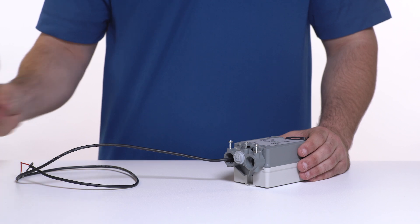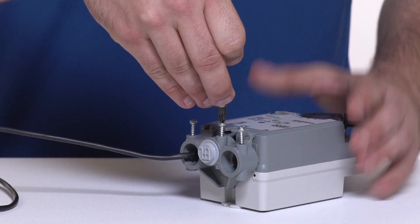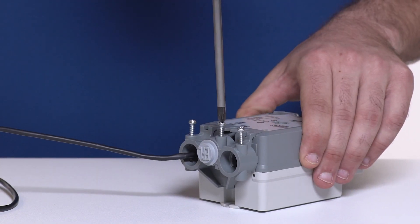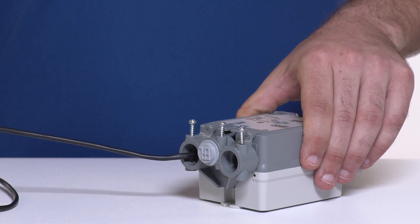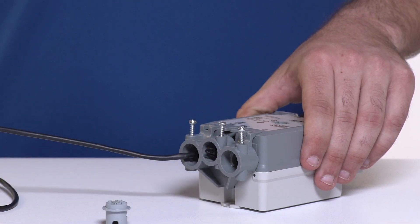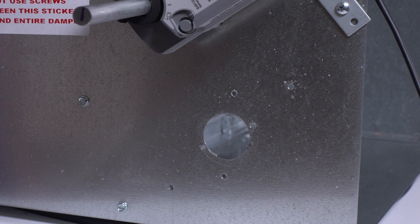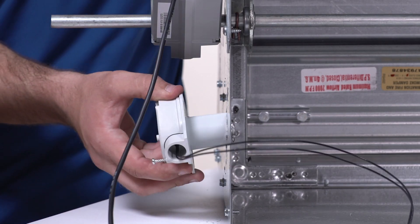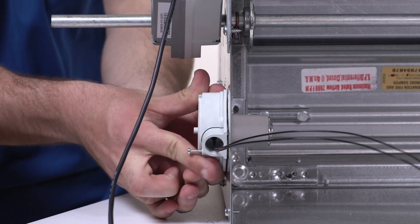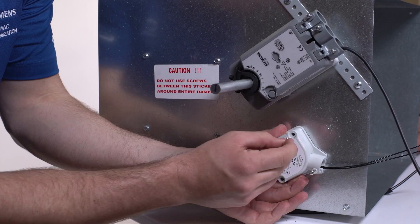If the electronic fusible link will be used, prepare the center conduit adapter on the actuator. Loosen the center screw to remove the EFL plug. Make a 1 3/8 inch diameter hole in the duct wall or damper's sleeve. The sensor will protrude into the duct or damper for proper temperature sensing.